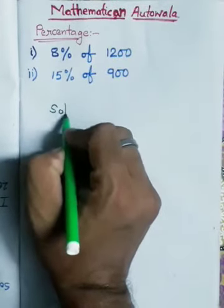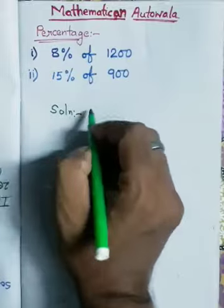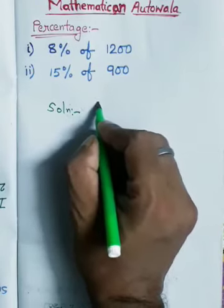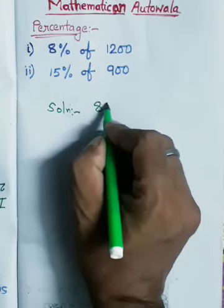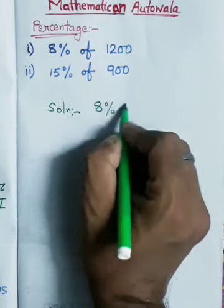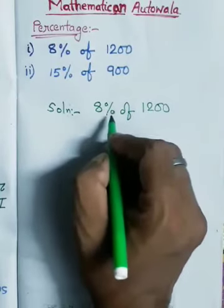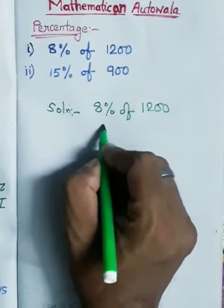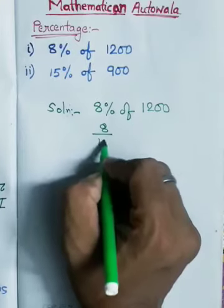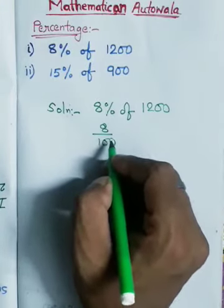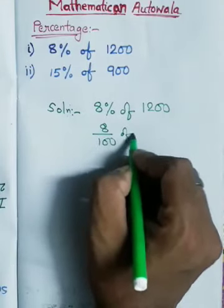Solution: When we change the percent, 8% of 1200, we write here 8 by 100. When we change the percent, we write down by 100. This is 1200.